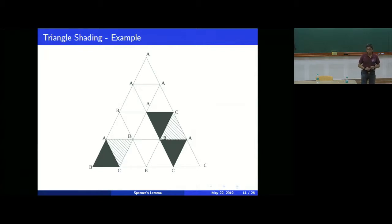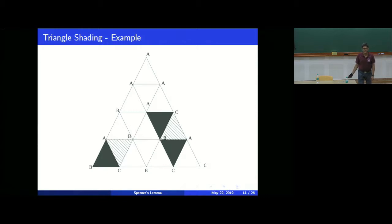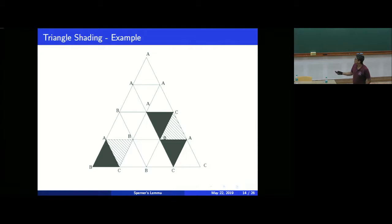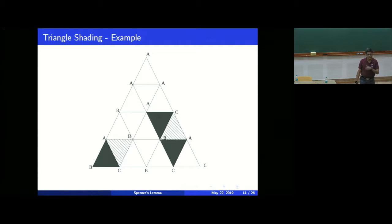So far so good. We have a triangle, we have triangulated it into smaller triangles, and we can go further and further. My claim is that you can label all the vertices in this fashion. The only rule is: on the edge opposite to C there is no C, on the bottom edge opposite to A there is no A, and on the other edge there is no B. Other than that, it is entirely random. Sperner's Lemma will hold for any valid labeling.